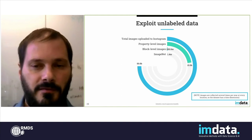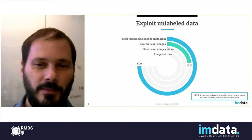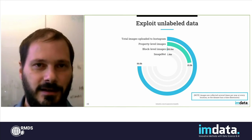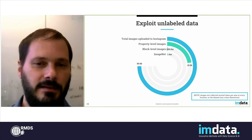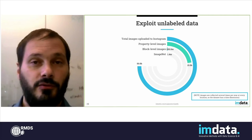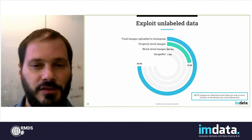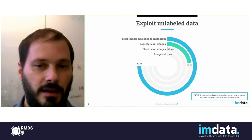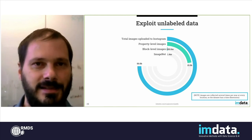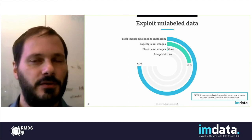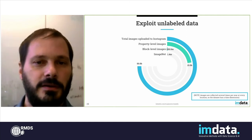At CAPE, for example, we have access to an estimated 15 billion property-level images. This is a very big dataset, comparable in size to the total images uploaded to Instagram, estimated at 50 billion. At the block level — the neighborhood images shown earlier — we have access to around 200 million, which is still a very large dataset. For comparison, ImageNet is 1.4 million images. This abundance of unlabeled data is characteristic of geospatial data; in other industries like self-driving cars you have to go out and collect the data yourself. Here in geospatial, you have this very large reservoir of unlabeled data.